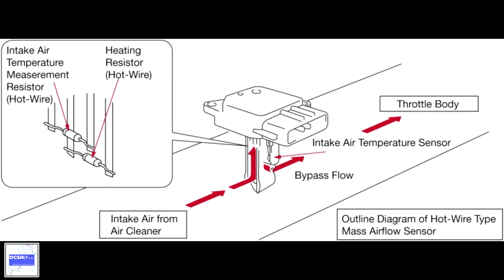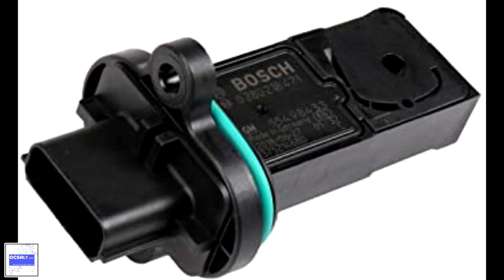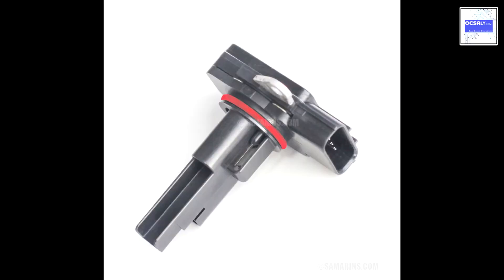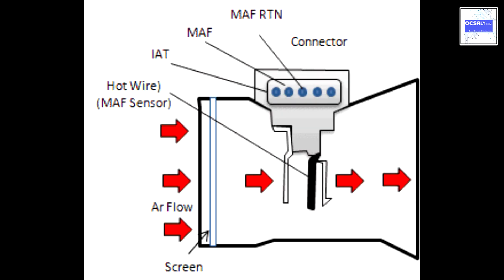The air mass information is necessary for the engine control unit, ECU, to balance and deliver the correct fuel mass to the engine. Air changes its density with temperature and pressure. In automotive applications, air density varies with the ambient temperature, altitude and the use of forced induction, which means that mass flow sensors are more appropriate than volumetric flow sensors for determining the quantity of intake air in each cylinder.